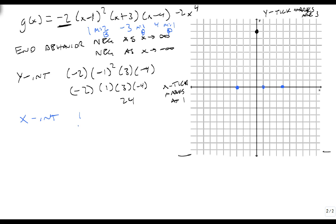At 1, which will bounce, because it's multiplicity 2. A minus 3, which will pass-through, because it's multiplicity 1. And a 4, which will pass-through, because it's multiplicity 1.